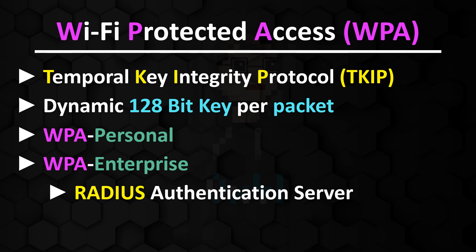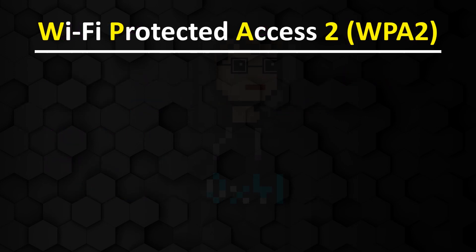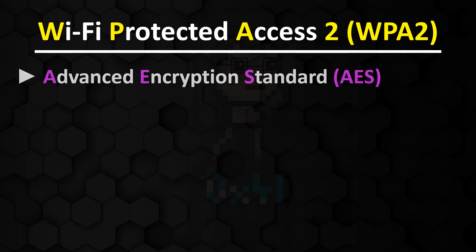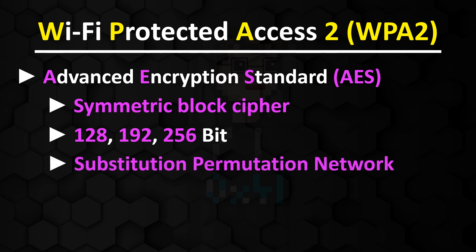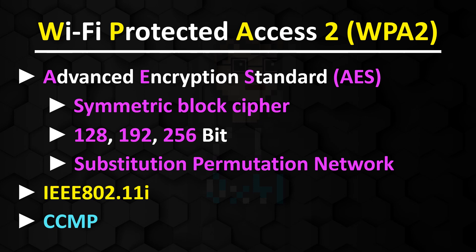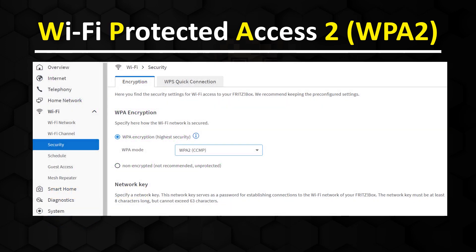WPA also had some security flaws over time, which is why WPA2 was developed to create more security. Instead of using TKIP, it uses the Advanced Encryption Standard, AES for short. AES is a symmetric block cipher that allows three different key lengths: 128, 192, and 256 bits. Unlike the Data Encryption Standard (DES), the algorithm is not based on a Feistel network, but on a substitution-permutation network. WPA2 is based on IEEE 802.11i and uses the Counter-Mode Cipher Block Chaining Message Authentication Code Protocol, CCMP for short. CCMP is shown in round brackets when you select WPA2 encryption on your FRITZ!Box.